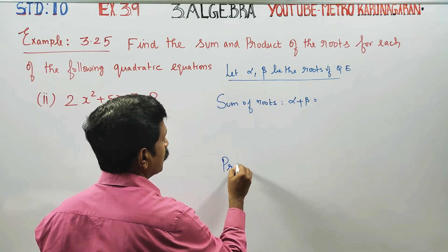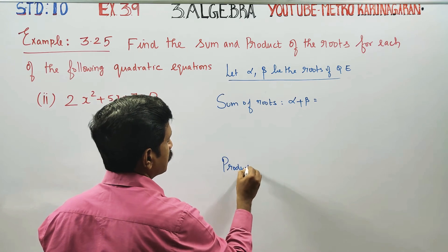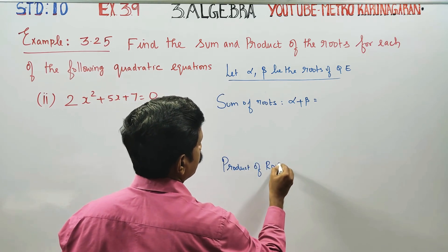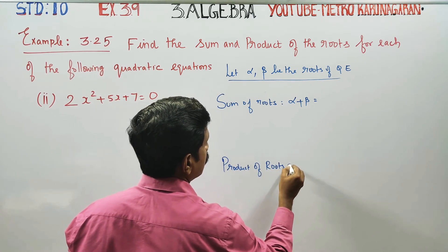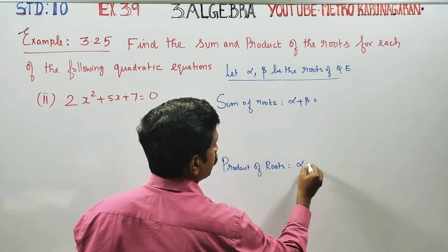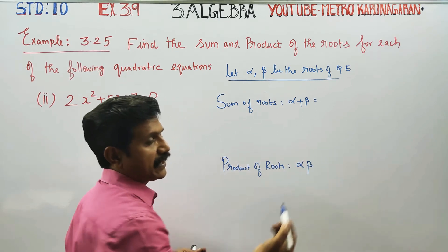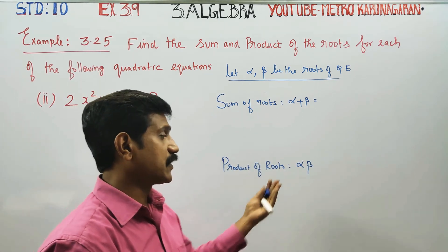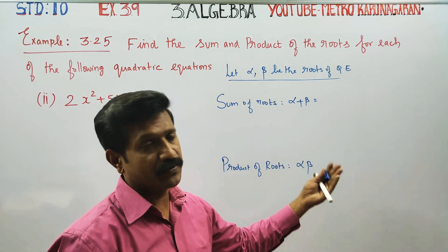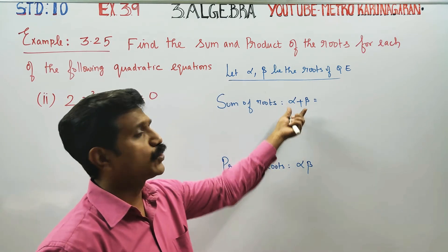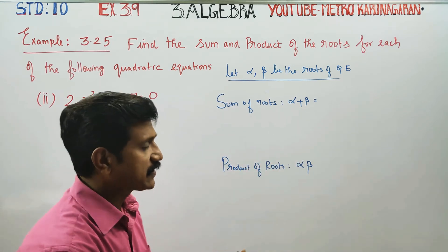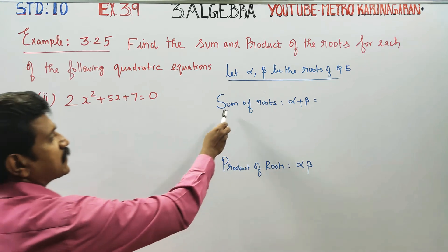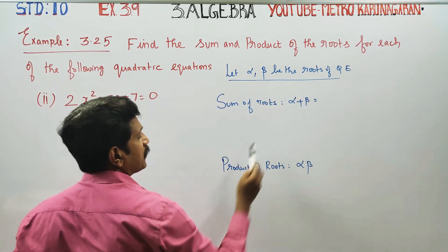Product of roots. Multiply alpha into beta. Alpha into beta — this answer is 1. Alpha into beta is 1. The sum of the roots is 1 and alpha, beta is 1.